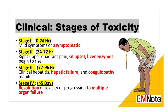Stage 3, 72 to 96 hours: vomiting, right upper quadrant pain, and symptoms of liver failure occur. This is the stage when clinical hepatitis, hepatic failure, and coagulopathy with prolonged INR are most likely to manifest. Stage 4, beyond 5 days: resolution of hepatic toxicity or progression to multiple organ failure occurs. Resolution occurs in survivors; multiple organ failure is sometimes fatal.